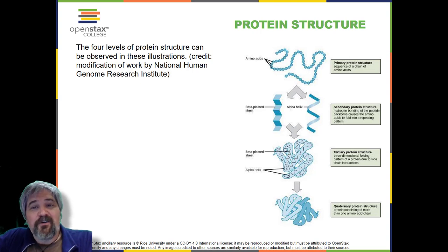Denaturation is often reversible because the primary structure is preserved if the denaturing agent is removed, allowing the protein to resume its function. Sometimes denaturation is irreversible, leading to a loss of function. One example of protein denaturation can be seen when an egg is fried or boiled. The albumin protein in the liquid egg white is denatured when placed in a hot pan, changing from a clear substance to an opaque white substance. Not all proteins are denatured at high temperatures. For instance, bacteria that survive in hot springs have proteins that are adapted to function at those temperatures.